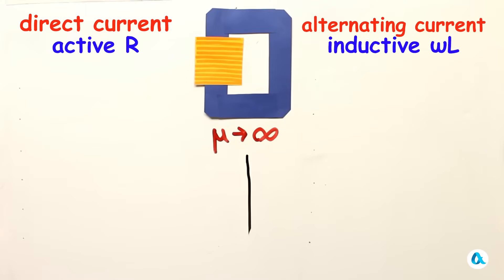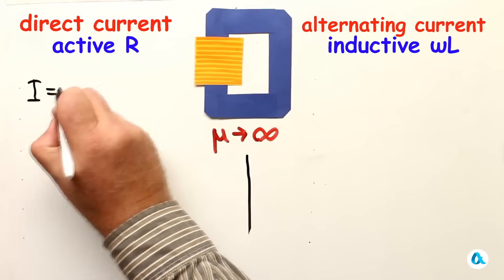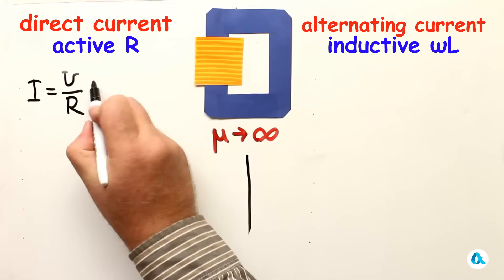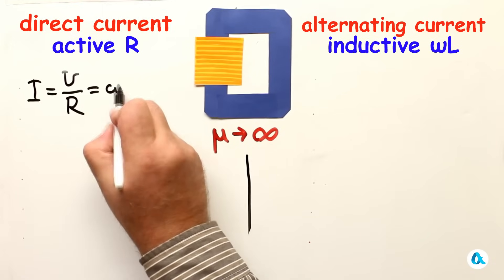And before we examine our paradox, I want to introduce some distinctions between the situations when direct current flows through the coil, and accordingly it acts as active resistance R, and when alternating current flows through it at a sufficient frequency for the coil to act as inductive resistance ωL. Let's write that in this situation the current, which is U divided by R according to Ohm's law,